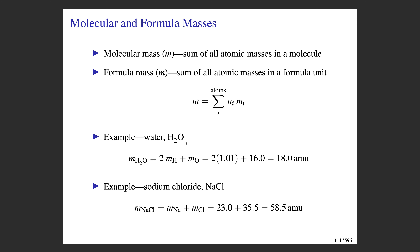Here are a couple of quick examples. The molecular mass of water is equal to two times the atomic mass of hydrogen plus the atomic mass of oxygen. Since there's a subscript of two, we need to double the mass associated with hydrogen, and we have only one oxygen atom. These numbers — the mass for hydrogen and the mass for oxygen — you look those up on the periodic table. For an ionic compound like sodium chloride, what we're actually calculating is the formula mass. The formula unit for NaCl is just NaCl, so you add up the mass of a sodium atom plus the mass of a chlorine atom, look these numbers up on the periodic table, and it gives us the result.